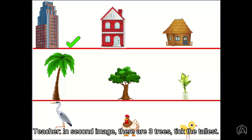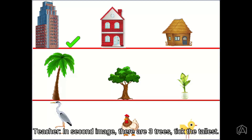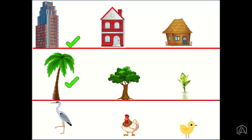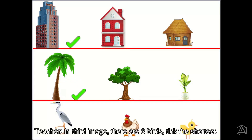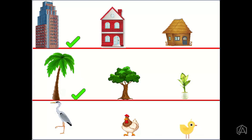In the second image, there are three trees. Tick the tallest. The first tree is tallest. In the third image, there are three birds. Tick the shortest. The third bird is shortest.